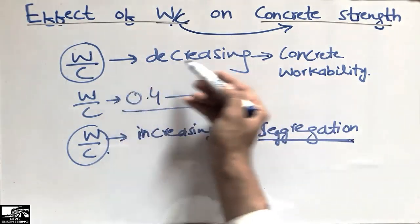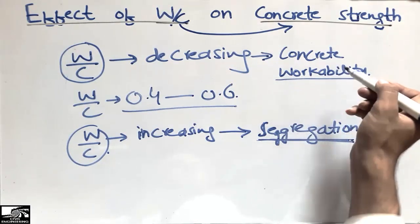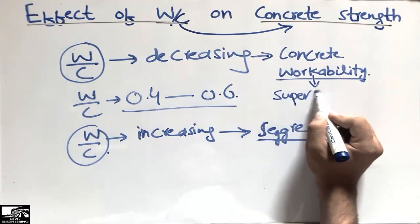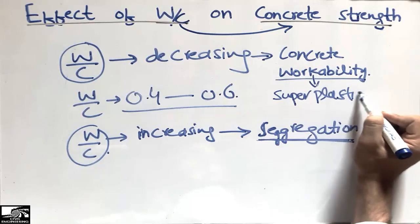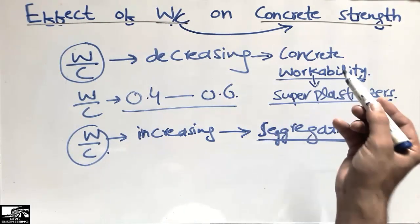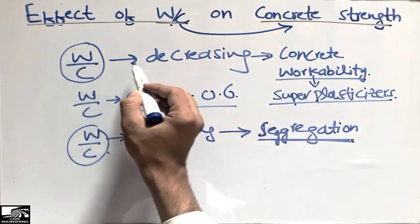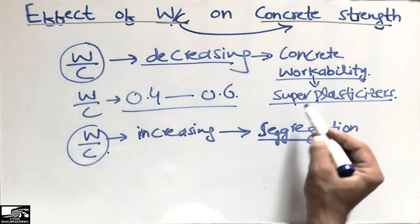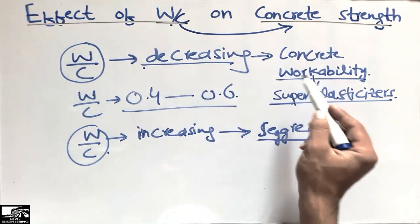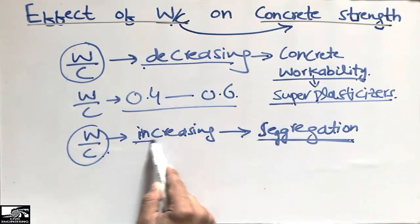When the water-cement ratio is decreased and workability is reduced, we use a super plasticizer — an admixture — to increase the workability. This way we have increased workability while also achieving higher strength by decreasing the water-cement ratio. This admixture helps us decrease the water-cement ratio and maintain workability at the same time.